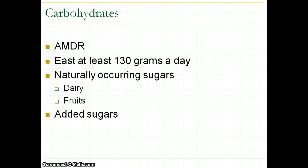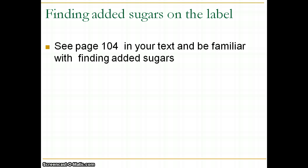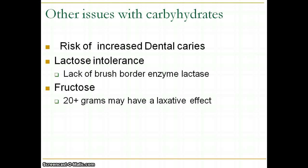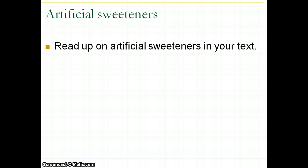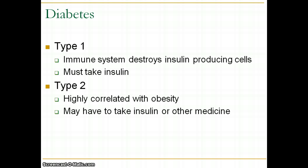Understand where naturally occurring sugars are found, such as in dairy and fruits. Also understand where added sugars are found — that's in your chapter. There's a great section on page 104 of your text on finding added sugars. Artificial sweeteners are generally regarded as safe and not basically harmful, though anything in a large enough amount could be harmful.